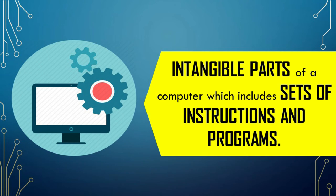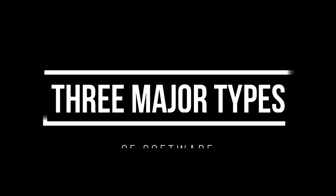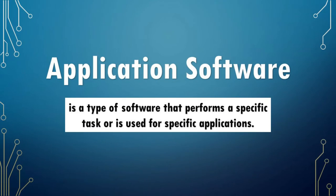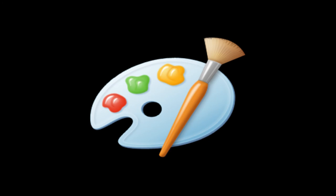Software are the intangible parts of a computer which include sets of instructions and programs that enable the computer system to operate effectively. There are three major types of software: application software, programming software, and system software. Application software is a type of software that performs a specific task or is used for specific applications. The keyword is 'specific', because all application software has a specific task. For example: Microsoft Word, mainly used for creating documents; Microsoft Paint, for editing and drawing; Calculator, for solving mathematical problems. Just remember the word 'specific' — that is application software.